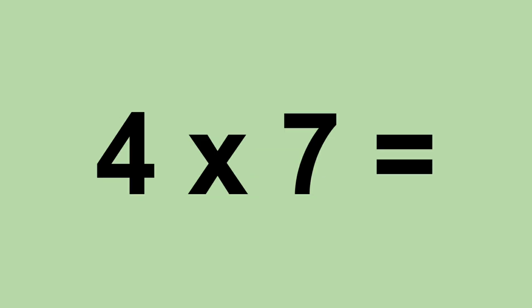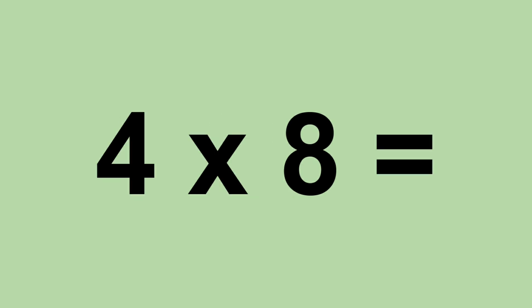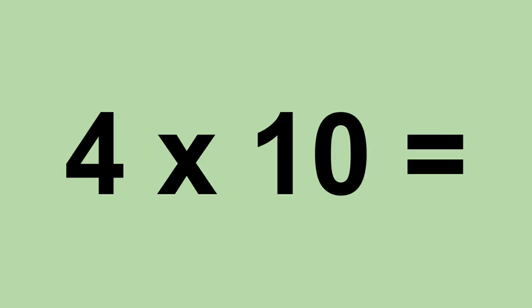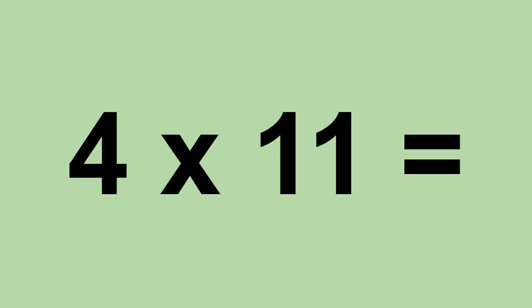Four times seven equals twenty-eight. Four times eight equals thirty-two. Four times nine equals thirty-six. Four times ten equals forty. Four times eleven equals forty-four. Four times twelve equals forty-eight.